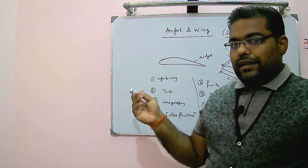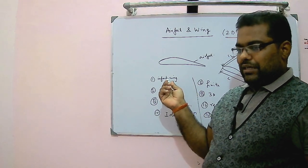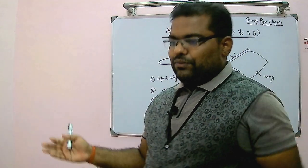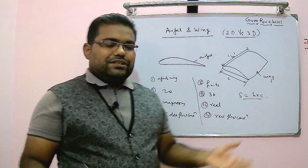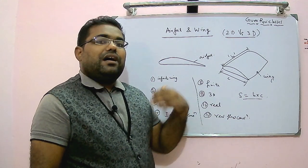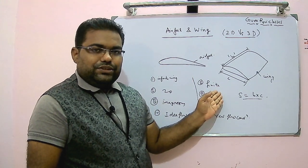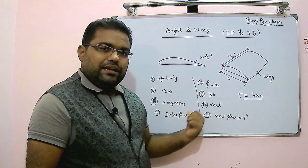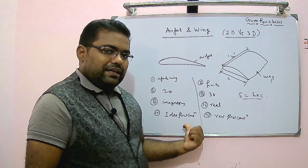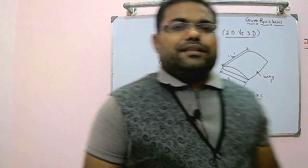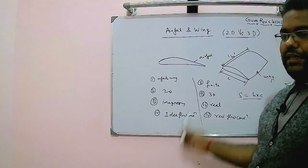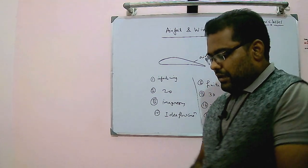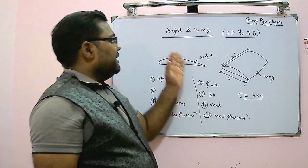These are the four basic differences between the two-dimensional wing and the three-dimensional wing, or the airfoil and the wing. One more point: the airfoil, having an infinite wingspan, will have a very large aspect ratio in the two-dimensional case, while the wing has a smaller aspect ratio. So: infinite wing vs. finite wing, 2D vs. 3D, imaginary vs. real, and ideal flow vs. real flow conditions.